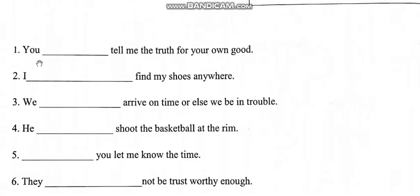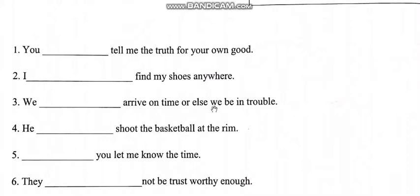The first sentence: 'You ___ tell me the truth for your own good.' Answer: You must tell me the truth for your own good. Second: 'I ___ find my shoes anywhere.' Answer: I can't find my shoes anywhere.